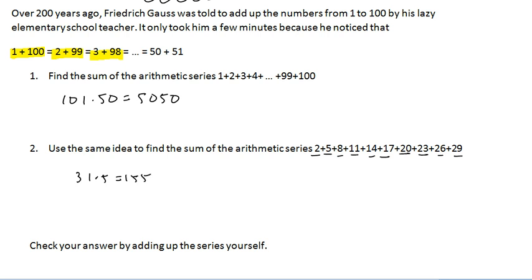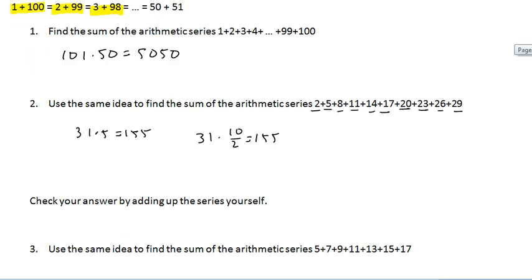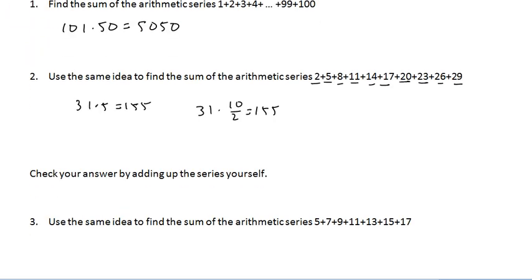Notice that we could have figured out how many of those were by counting up. There was 10 things, so another way to think about it would be 31 times half of 10 would give us 155. And if we were to pull out our calculators and just add 2 plus 5 plus 8 plus 11, we'd still get 155.